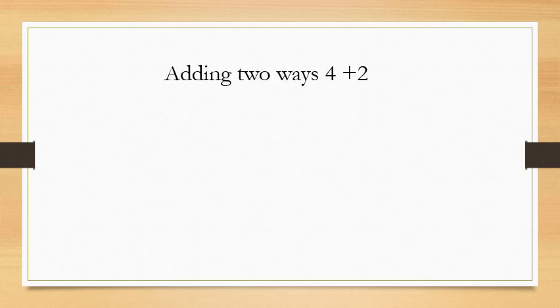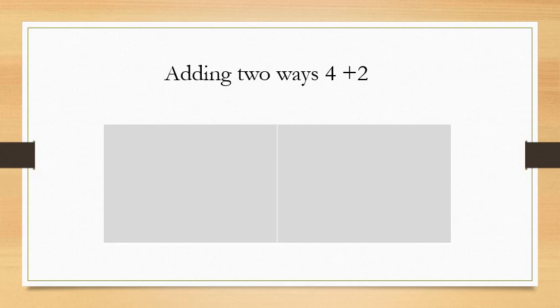Now let's move to another question: adding two ways — 4 plus 2. You have to find the sum of 4 plus 2 by adding in two ways, that is horizontally and vertically. First, we can add horizontally, that is side by side. Draw 4 lines: 1, 2, 3, 4. Then draw 2 lines: 1, 2. Count how many lines in total: 1, 2, 3, 4, 5, 6. So 4 plus 2 equals 6.